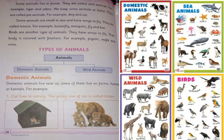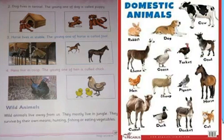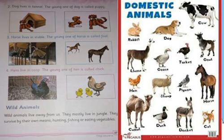Domestic animals live near us. Some of them live on farms, homes, or kennels. For example, cat lives in a cat tree and the young one of cat is called a kitten. Dog lives in a kennel and the young one of dog is called a puppy. Horse lives in a stable and the young one of horse is called a foal. Hen lives in a coop and the young one of hen is called a chick.